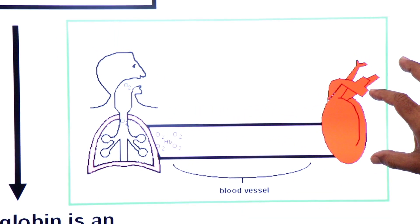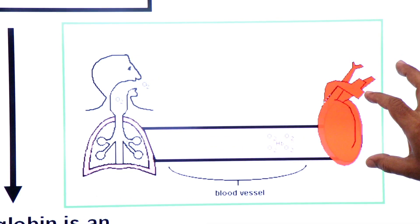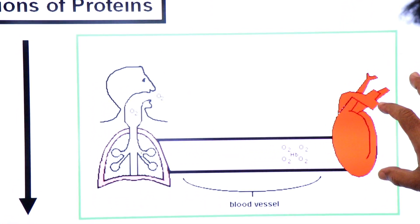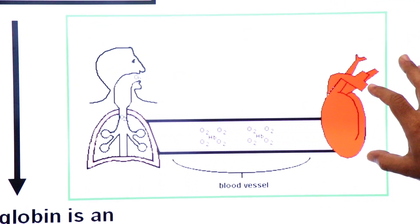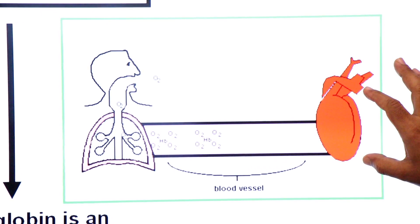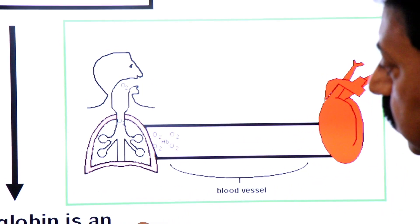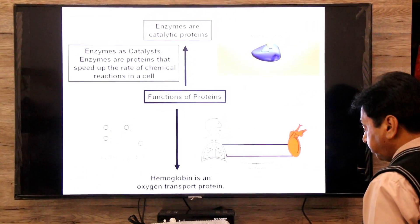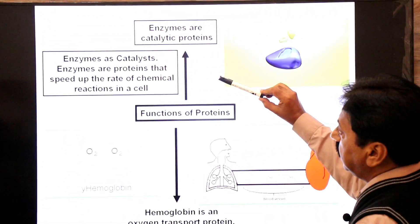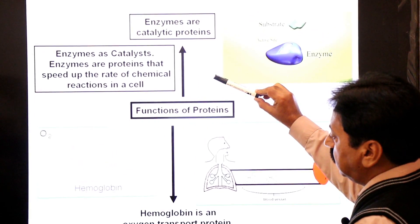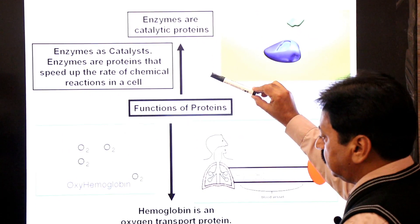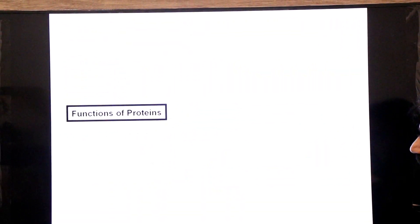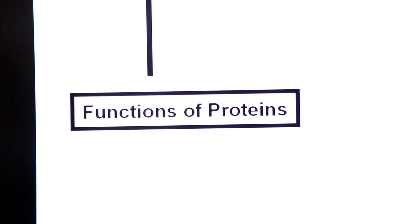When oxygen combines with hemoglobin, a new substance called oxyhemoglobin is formed. Oxyhemoglobin then delivers oxygen to all parts of the body — to brain cells, liver cells, and every cell in the body. Oxygen is delivered in the form of oxyhemoglobin. Hemoglobin is therefore a transport protein. We have covered enzymes as catalytic proteins and hemoglobin as a transport protein.